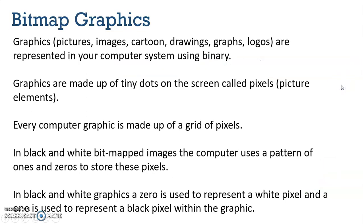The first type of graphic we're going to look at is a bitmap. Graphics — which are also pictures, images, cartoons, drawings, graphs, or logos — are all represented in your computer system using binary, which we know is ones and zeros. Graphics are made up of tiny dots on the screen called pixels, and pixels is really just the shortened version of picture elements.